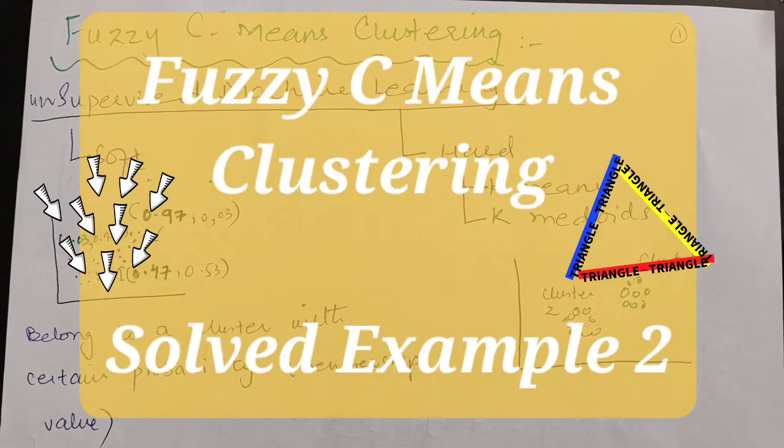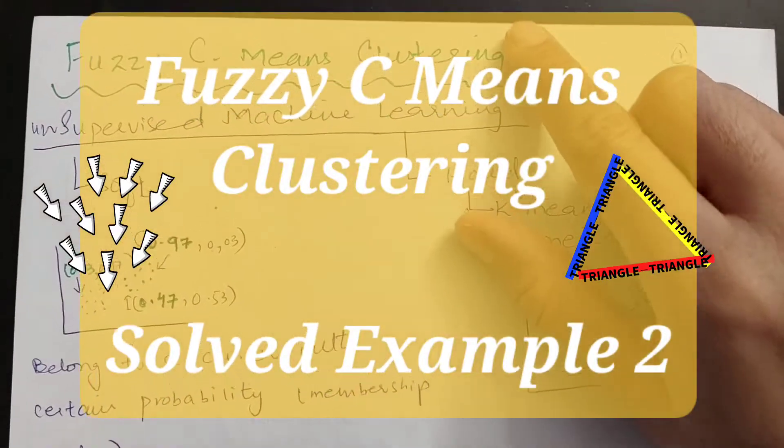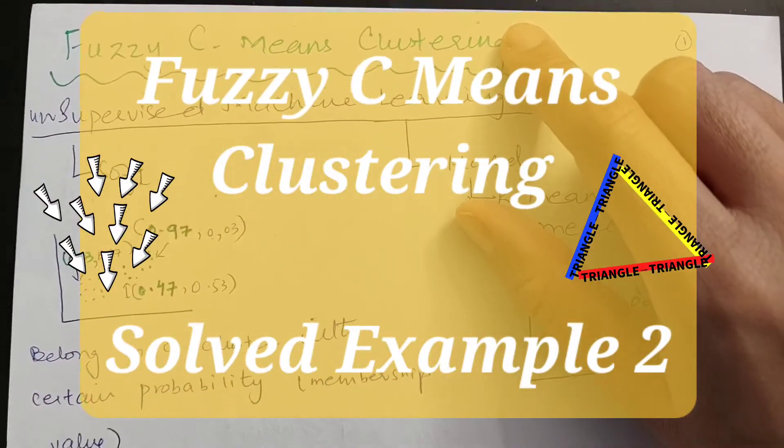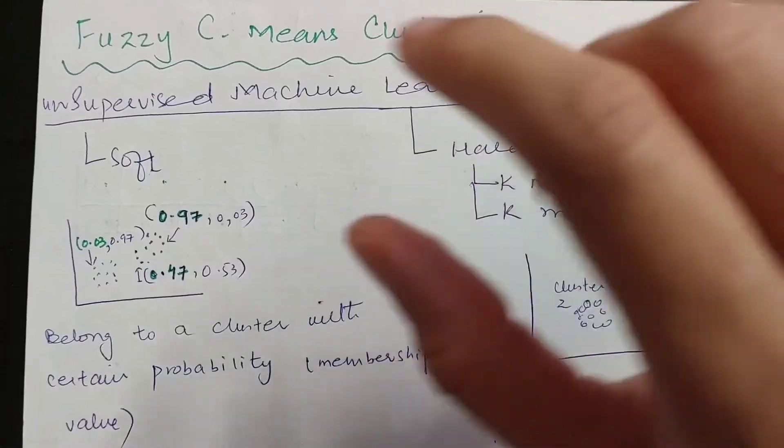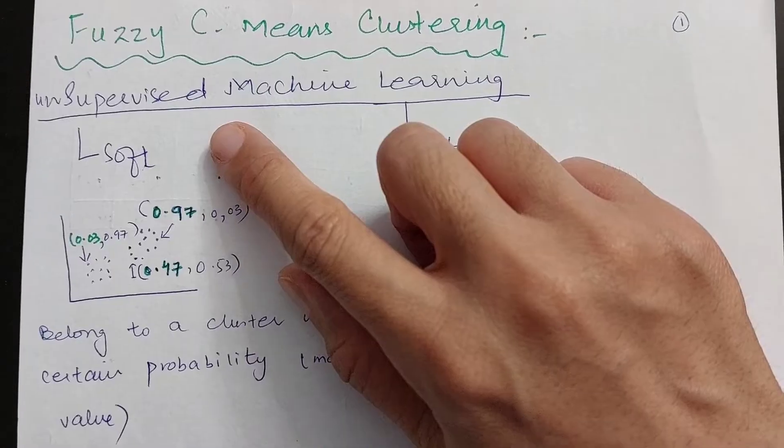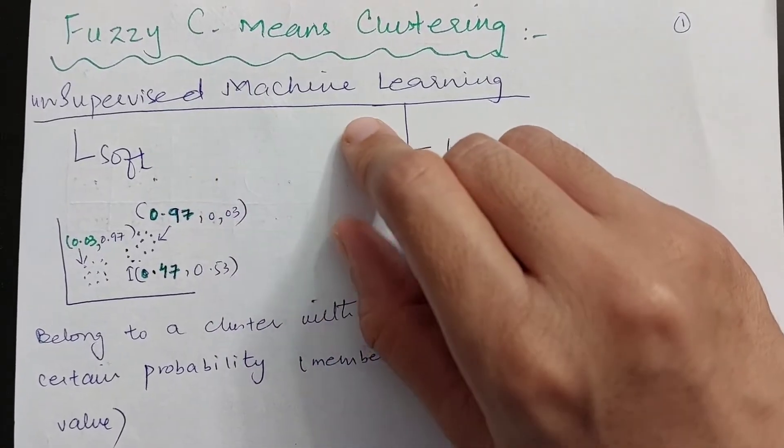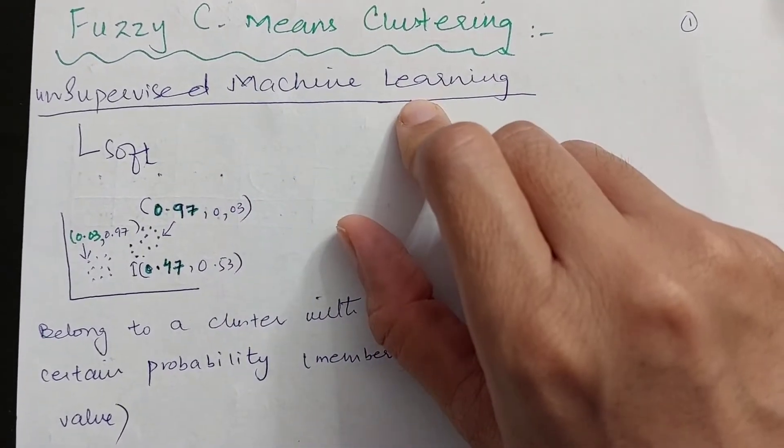Here we are going to learn about fuzzy c-means clustering. Fuzzy c-means clustering is a type of unsupervised machine learning.